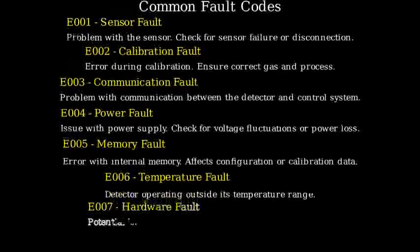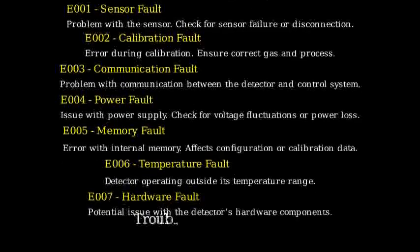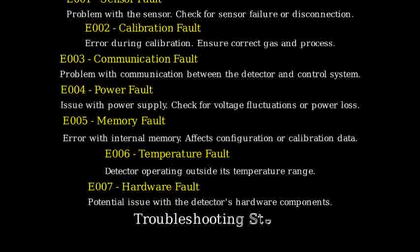Code E007 — Hardware fault: a potential issue with the detector's hardware components. Here are some general troubleshooting steps to resolve these faults.